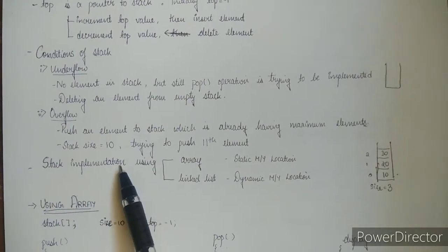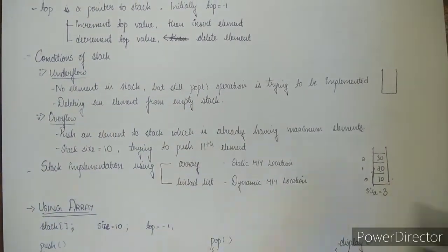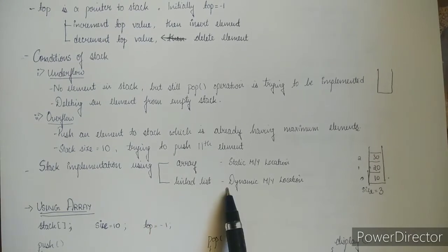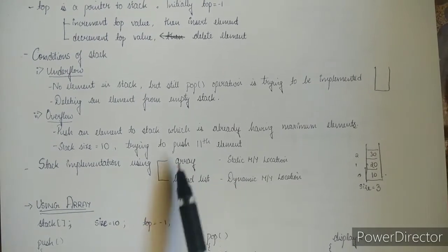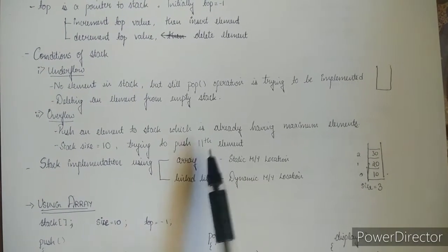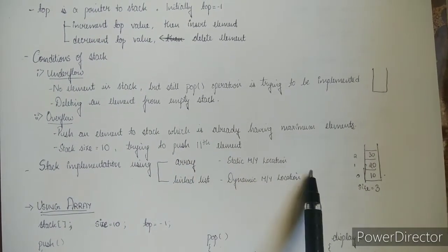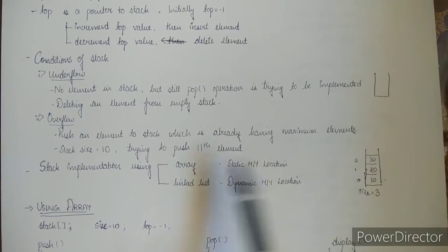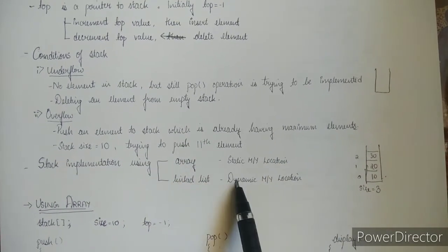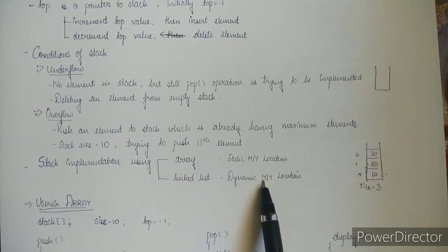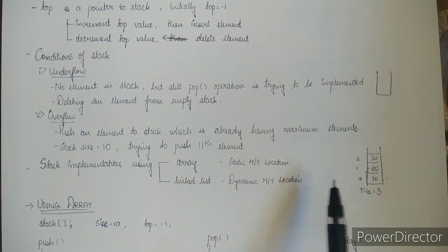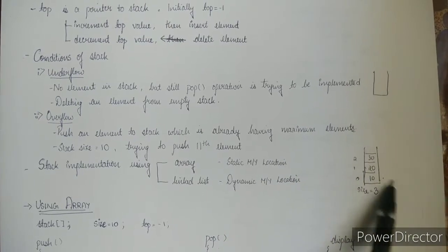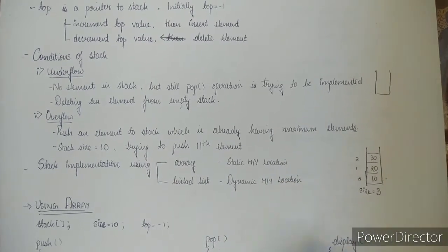Stack implementation can be done in two ways: one using an array and the other using a linked list. In the case of an array, it is static memory allocation — the memory size is fixed. In the case of a linked list, it is dynamic memory allocation, so you can keep on adding elements to the top of the stack.